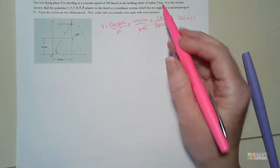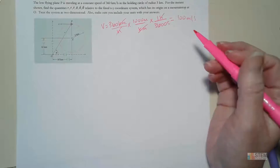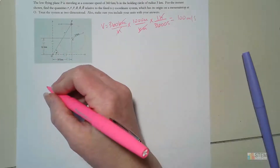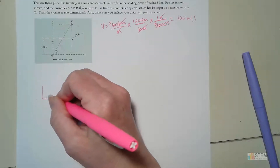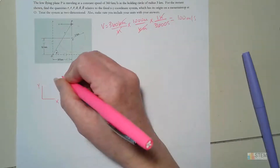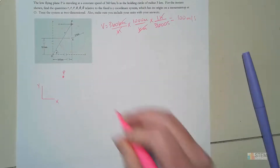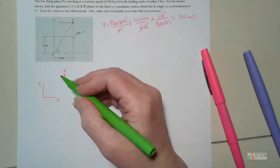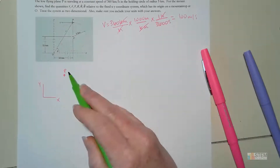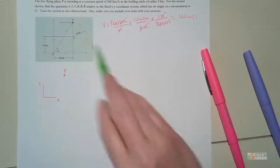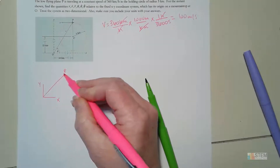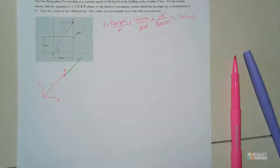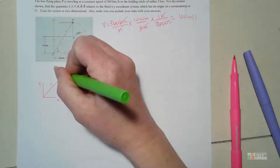We've got the radius and velocity — that's pretty much all it gives me. I'm going to redraw the picture and label my r and θ coordinates. Here's x, here's y, and the plane is at point P. Remember r is just an extension of the radial line, so the radial axis is positive in that direction.